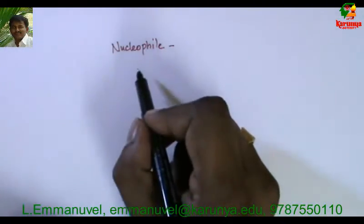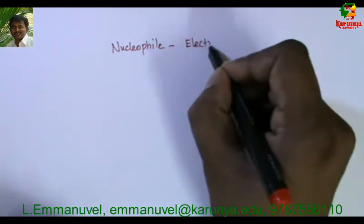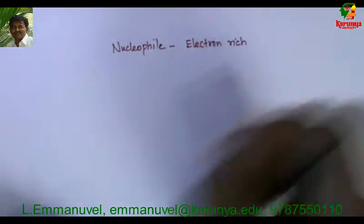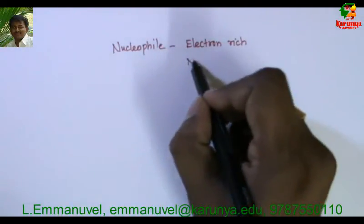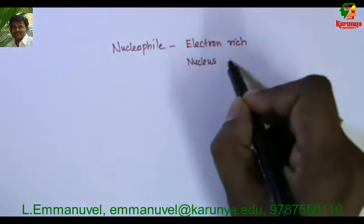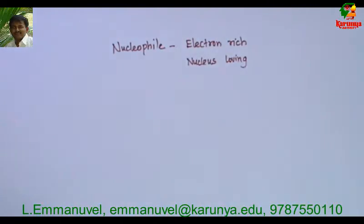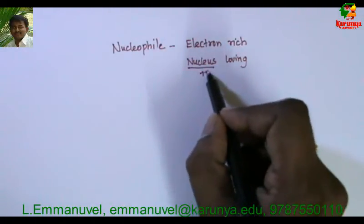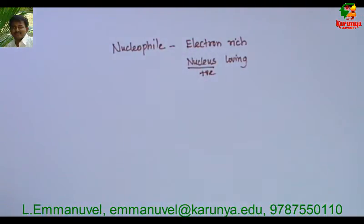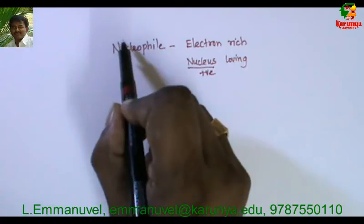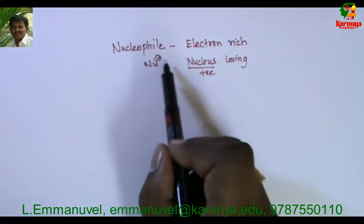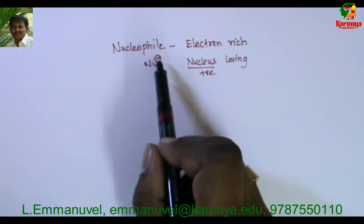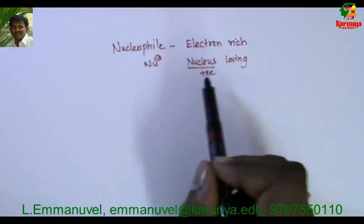Nucleophiles are electron-rich species. The meaning of nucleophile is nucleus-loving. You may know the nucleus has a positive charge, so the nucleophile loves the positive charge — this is possible only if the nucleophile has negative charge or more electron density. That is why generally we say the nucleophile prefers the positive charge present in the nucleus.